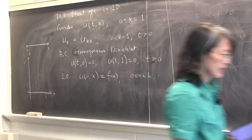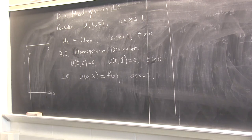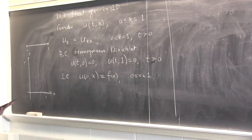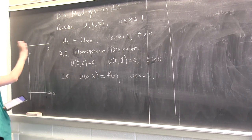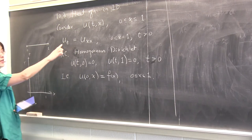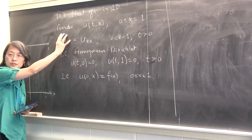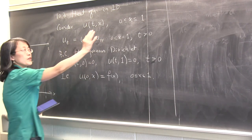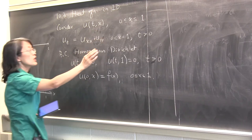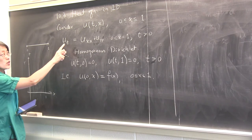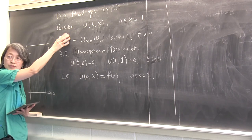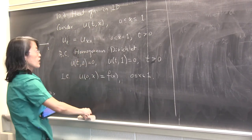We want to find numerical approximations. The heat equation is almost equally important as the Laplace equation, because it's a time-dependent problem built on top of the Laplace equation. If you wait a long time and the heat distribution reaches equilibrium — meaning it no longer changes in time — then U sub T becomes zero. So the steady-state solution of the heat equation is the solution of the Laplace equation. It's a very important equation.